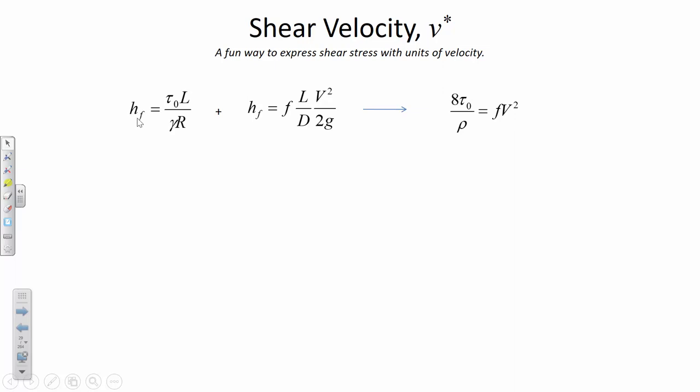The hydraulic radius for a circular pipe flowing full is D divided by 4, because area is pi D squared over 4, and the wetted perimeter is pi D. If we combine the shear stress and pipe friction relationship with the Darcy-Weisbach equation, we can rearrange and cancel like terms. The result shows that the friction factor is directly proportional to boundary shear stress — if shear stress goes up, so does the friction factor.